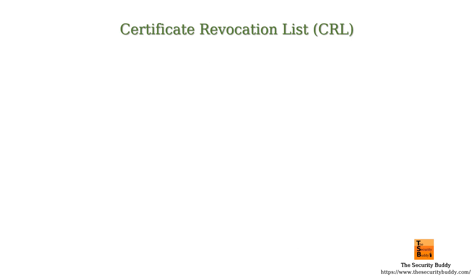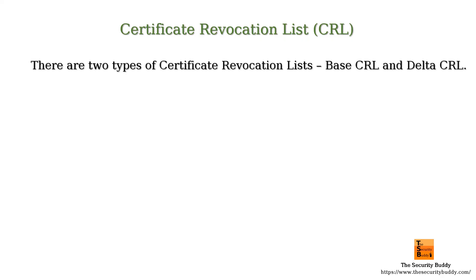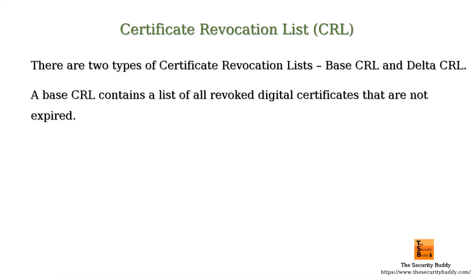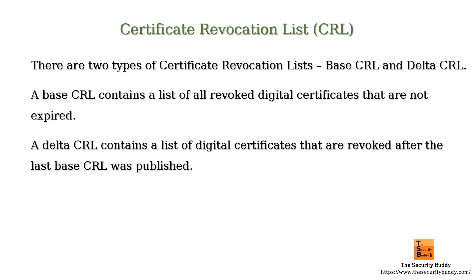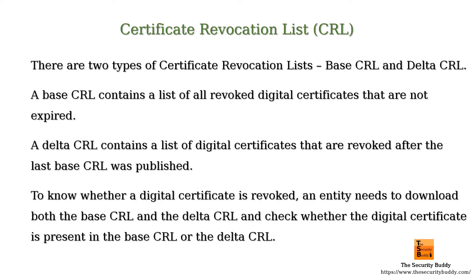There are two types of certificate revocation lists: Base CRL and Delta CRL. A Base CRL contains a list of all revoked digital certificates that are not expired. A Delta CRL contains a list of digital certificates that were revoked after the last Base CRL was published. To know whether a digital certificate is revoked, an entity needs to download both the Base CRL and the Delta CRL and check whether the digital certificate is present in either. If it is, the entity will know that the digital certificate is revoked and cannot be trusted anymore.